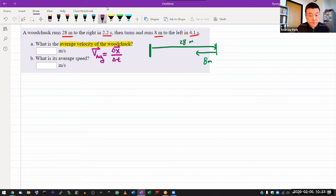So when you're looking at this, the thing that you have to be careful with is how to treat this displacement. So in this question, your total displacement, delta x, it's not 28 plus 8, because displacement is a vector, direction matters. So if you say going to the right is moving in the positive direction, then going to the left is going in the negative direction. So this should be minus.